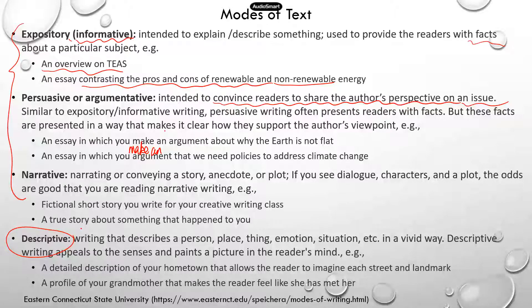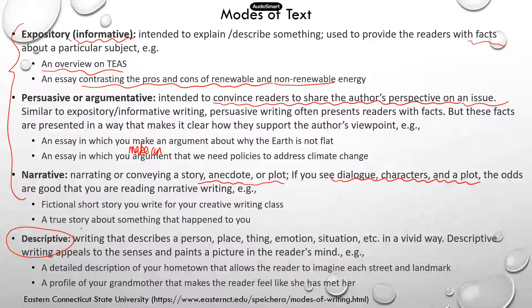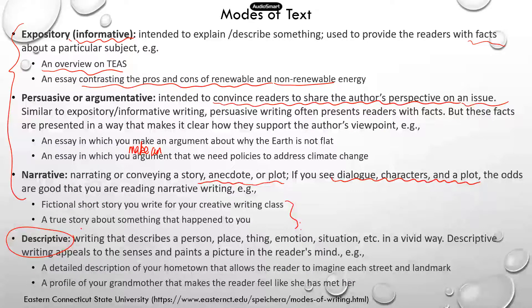Next is narrative. The writer narrates or conveys a story, anecdote, or a plot. Usually, if you see dialogue, characters, or plot, it's probably narrative writing. Examples include a fictional story you write for a creative writing class, or a true story about something that happened to you — maybe something exciting from your childhood that you're writing about. That's going to be narrative.